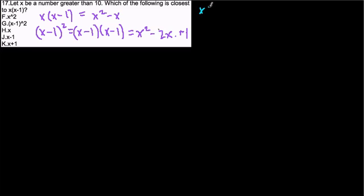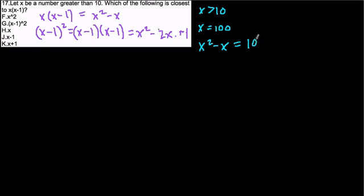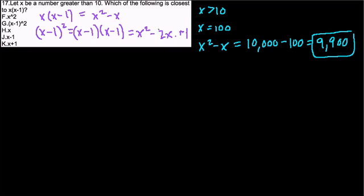Since x is greater than 10, let's try a value like x equals 100. Our original expression is x squared minus x. With x equal to 100, x squared is 10,000 — a one with four zeros — minus 100 gives us 9,900. So when x is 100, that's what our original expression equals.